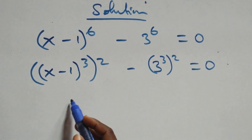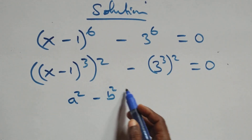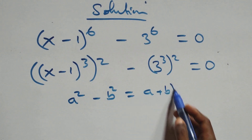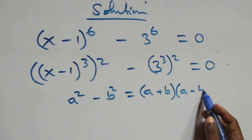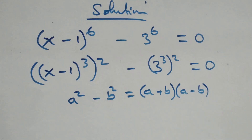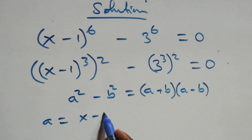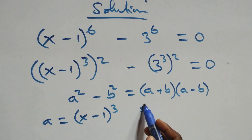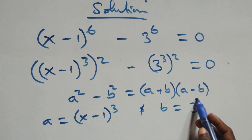This follows the form a squared minus b squared, which we write as (a + b)(a - b). Here a stands for x minus 1 all raised to the power 3, and b stands for 3 raised to the power 3.